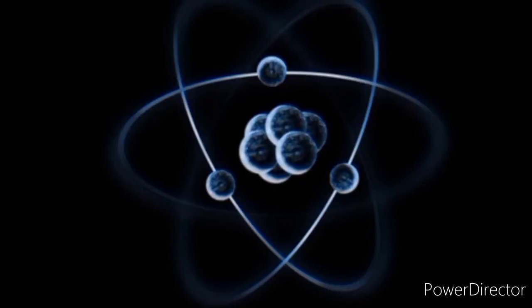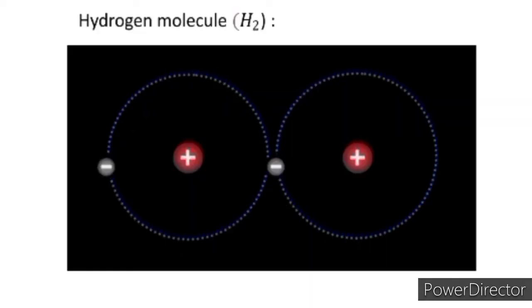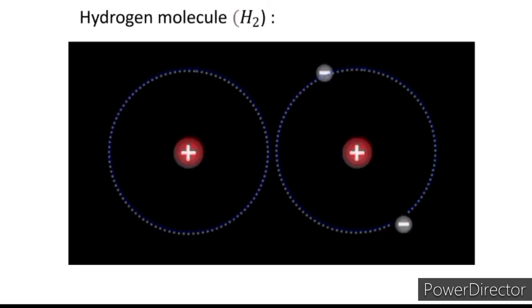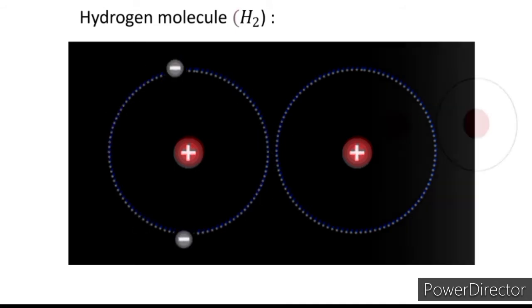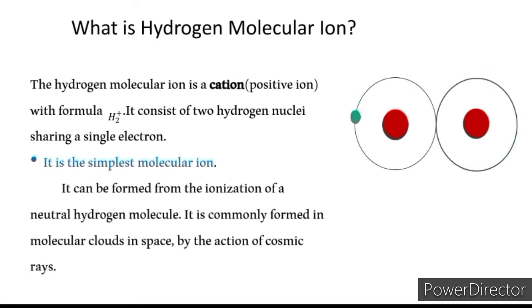Today we'll discuss a completely new topic: the hydrogen molecular ion. We all know about the hydrogen molecule, which consists of two hydrogen atoms having two protons and two electrons. The hydrogen molecular ion is actually a cation — it has two protons but only one electron. That's why we call it the simplest molecular ion.